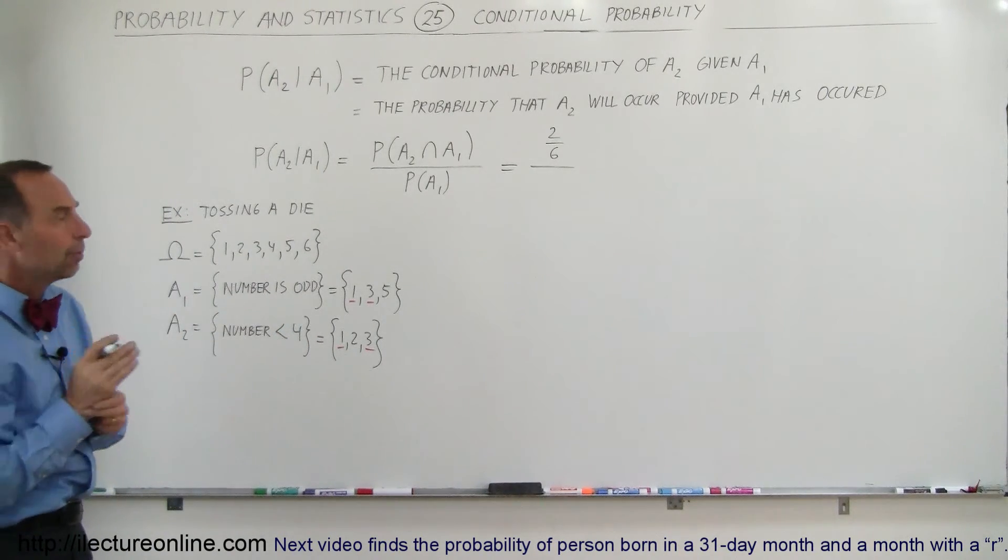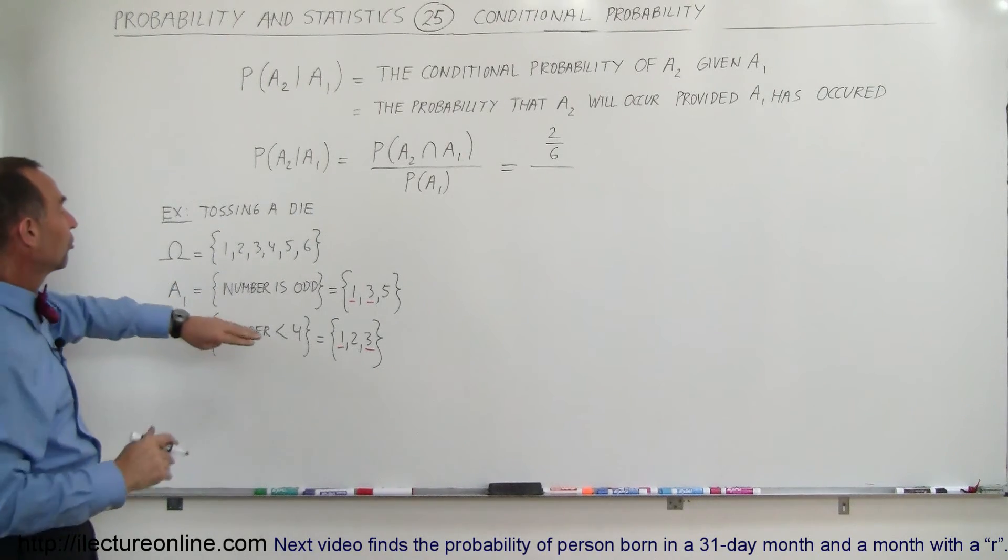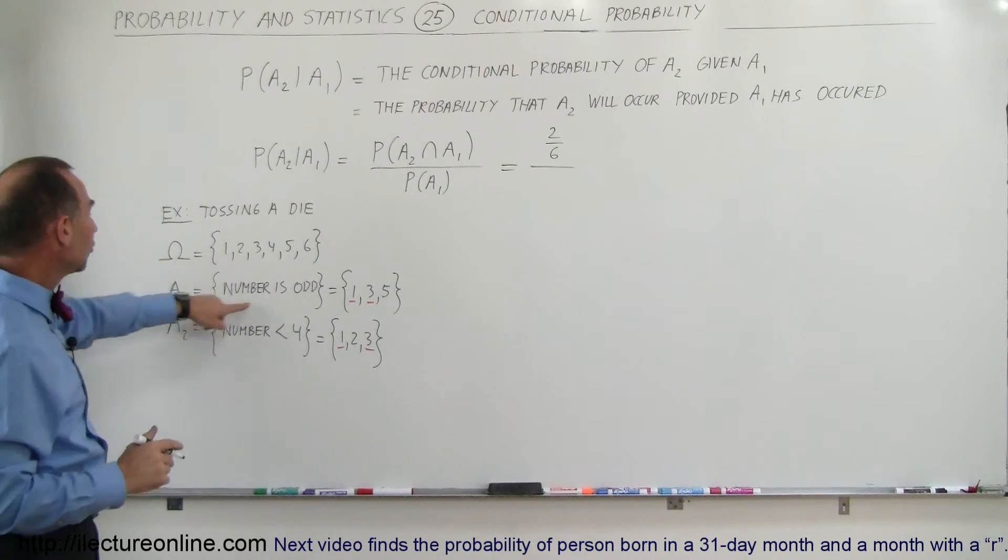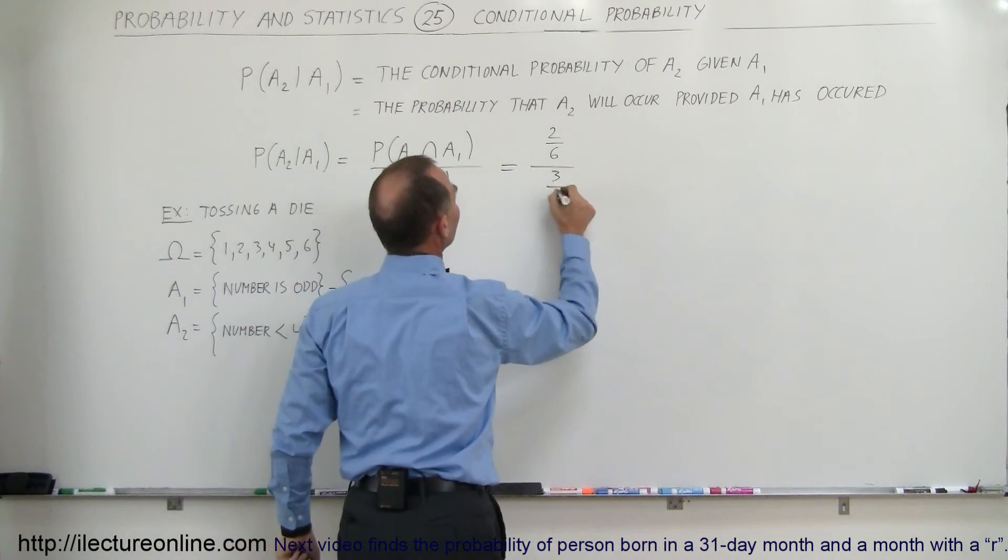We now divide that by the probability that A1 has occurred or would occur, I should say. A1 means the number is odd. There's three numbers that are odd out of 6, so the probability there is 3 divided by 6.